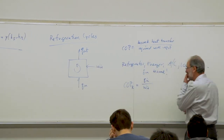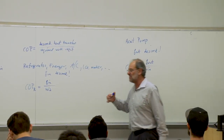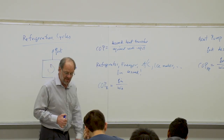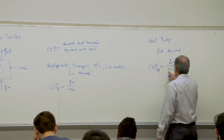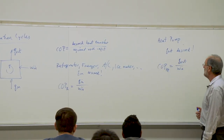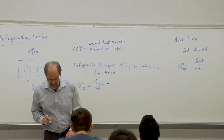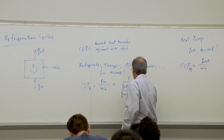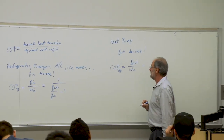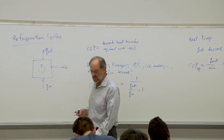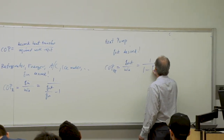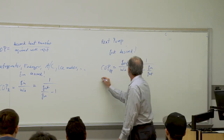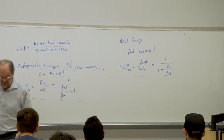Both equations can be modified. For a cycle, net work equals the change in heat, so we can substitute Q_in minus Q_out for the work term. For the refrigerator or air conditioner: COP_R equals 1 over (Q_out/Q_in minus 1). For the heat pump: COP_HP equals 1 over (1 minus Q_in/Q_out). This was all derived in your ME301 thermal class, so I won't go through the derivation again.